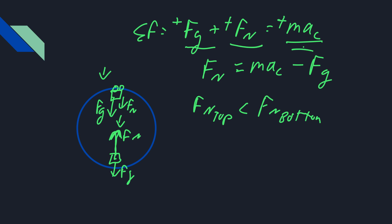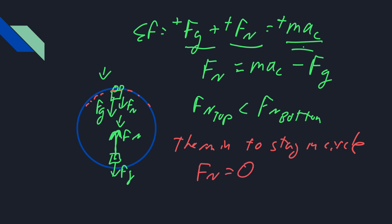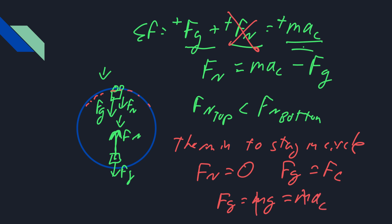Another variation at the top: they might ask what is the minimum speed to stay in the circle. When you barely make it around, the normal force is going to be zero, and only gravity provides the centripetal force. So when normal force is zero, FG equals MAC, which is MG equals MAC. Masses cancel, and you just have G equals V squared over R.